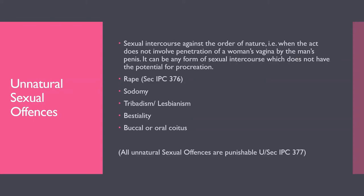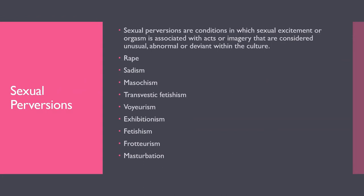Sexual perversions are conditions in which sexual excitement or orgasm is associated with acts or imagery considered unusual, abnormal, or deviant within the culture. Examples include taboo behaviors that fall outside natural and unnatural offenses already discussed. Rape is also included in sexual perversions. In the expanded post-amendment definition, rape can include touching or any act done against a woman without her consent — not necessarily penetration.